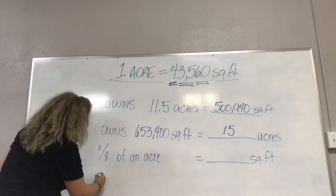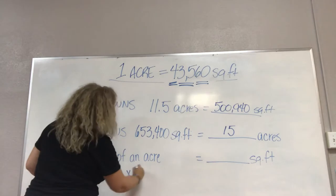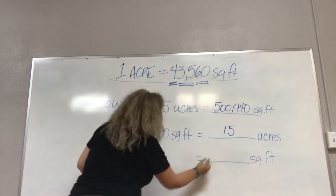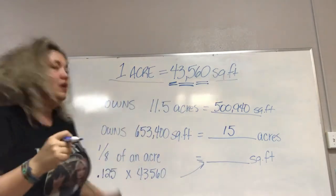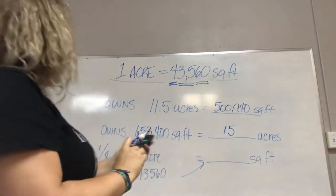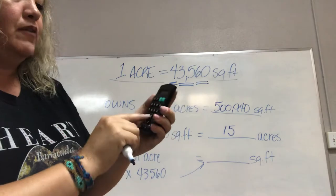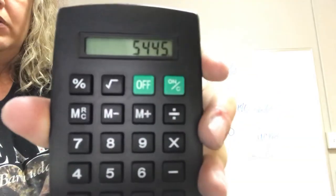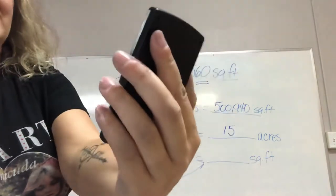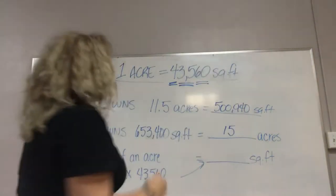Okay, so let's plug that in. 0.125 times 43,560 is going to give us how many total square feet our farmer owns with his one-eighth of an acre. So 0.125 times 43,560 equals he owns 5,445 total square feet.